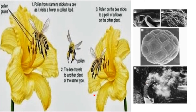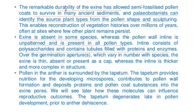Pollen coat contains lipid, protein, carbohydrate, and pigment. In insect-pollinated species it is brightly colored. It functions in pollinator attraction, adhesion to the pollinator's body and to other grains, and recognition of a compatible stigma. The pollen wall exine pattern is characteristic of the species. It contains sporopollenin, a highly resistant polymerized carotenoid, and has micropores which contain a material called pollen chitin. The remarkable durability of exine has allowed semi-fossilized pollen to survive in many ancient sediments.